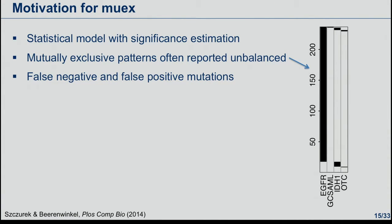The first paper we published on this was our approach muX. The motivation was that we wanted to propose a rigorous statistical model that could provide significant estimation for mutual exclusivity patterns. We also saw that a lot of reported mutual exclusivity patterns seemed unbalanced — with one gene highly dominating the entire pattern, which seemed biologically not really relevant. We also wanted to account for false negative and false positive mutations in tumor sequencing data.